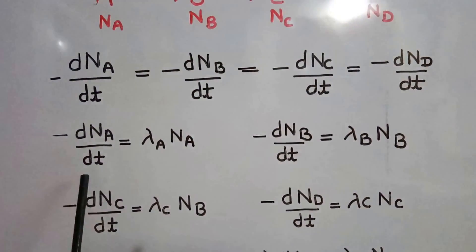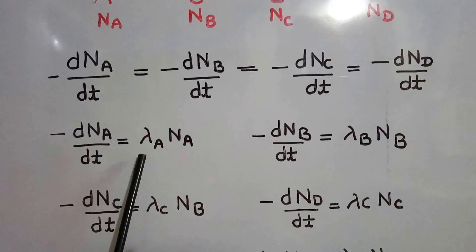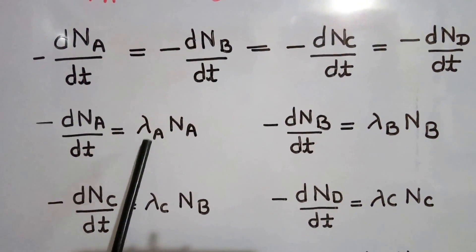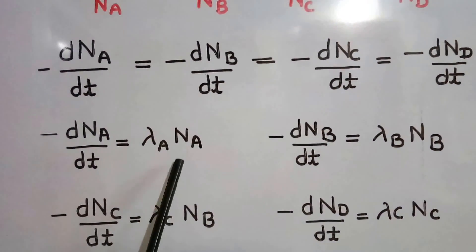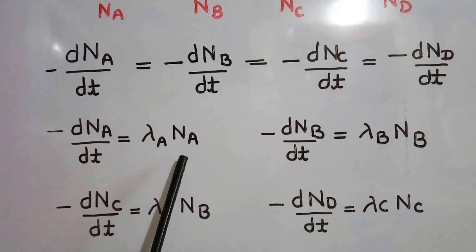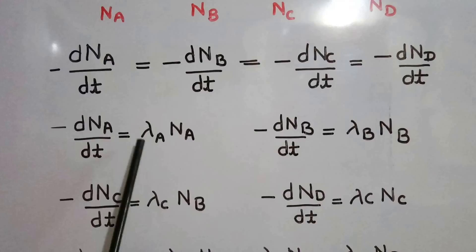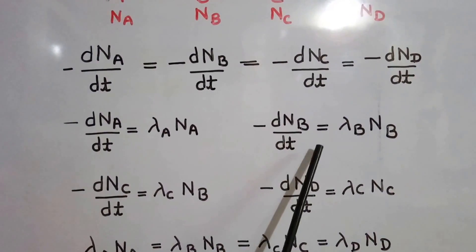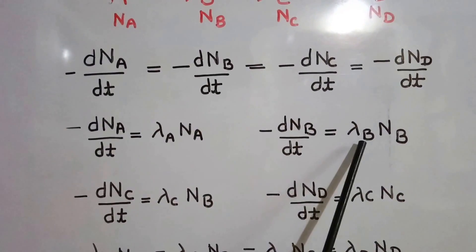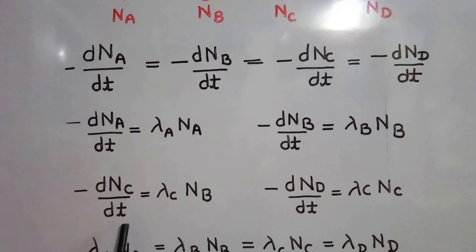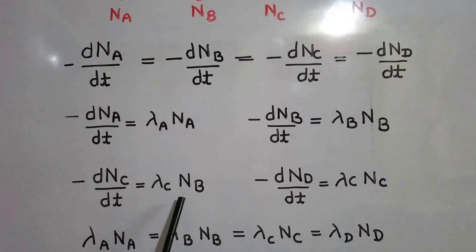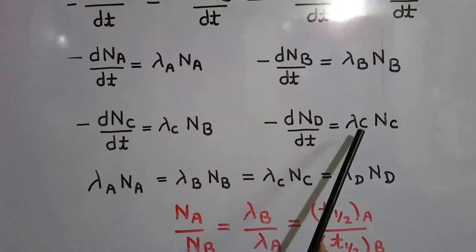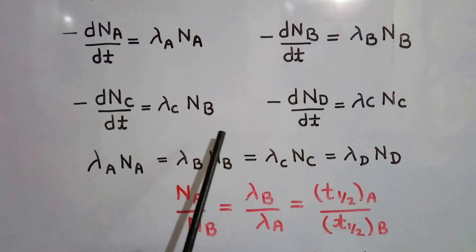So minus dNA/dT equals λA · NA, where λA is the disintegration constant for element A and NA is the number of atoms of A. Similarly, minus dNB/dT equals λB · NB, minus dNC/dT equals λC · NC, and minus dND/dT equals λD · ND.